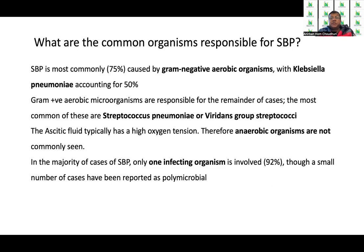The most common organisms responsible for SBP — in 75% of cases — are gram-negative organisms, with Klebsiella predominating in over 50% of cases. Gram-positive aerobic microorganisms account for most of the remainder, most commonly Streptococcus pneumoniae or the viridans group streptococci. Anaerobic organisms are not commonly seen because ascitic fluid typically has a high oxygen tension, which prevents anaerobes from thriving. In the majority of cases one infective organism is involved, although a small number of cases have been reported as polymicrobial.